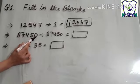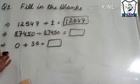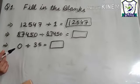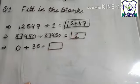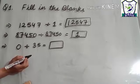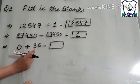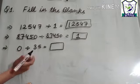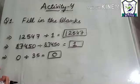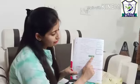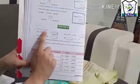You are given the number 87,450 divided by itself, that is 87,450. This is your second property of division: when a number is divided by itself, the quotient is always 1. Again, when 0 is divided by 35 — when 0 is divided by any number (except 0) — the quotient is always 0. So your first question, fill in the blanks, is totally based on your properties of division.